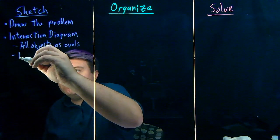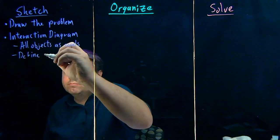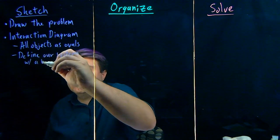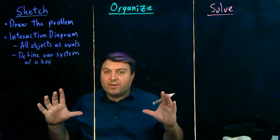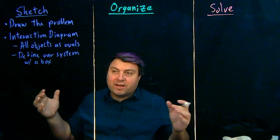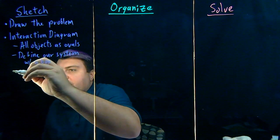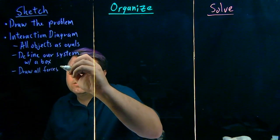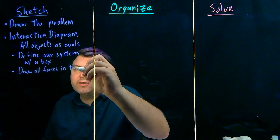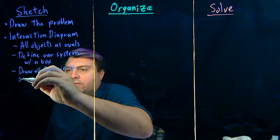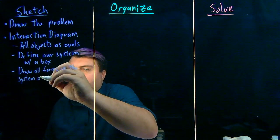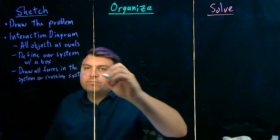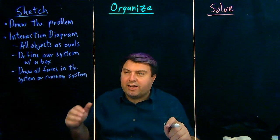We want to define our system with a box. Anything inside of that box is in our system, anything outside is the environment. And we want to draw all forces in the system or crossing the system. So that's our interaction diagram.